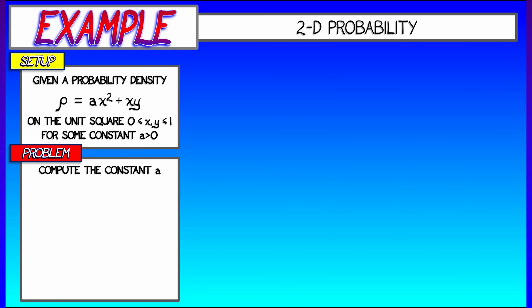We remember that the net mass is equal to 1, so if I take that density rho and integrate it over the entire domain as X and Y go from 0 to 1, then set that integral equal to 1 and solve for A — that's going to work.